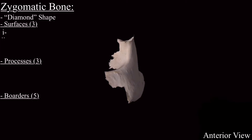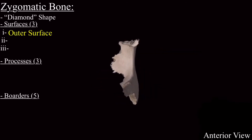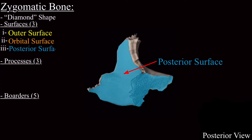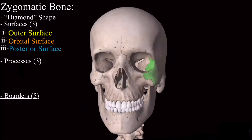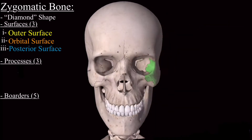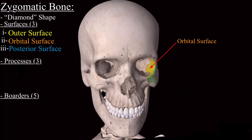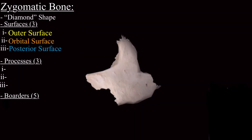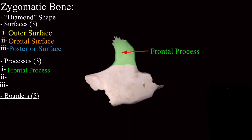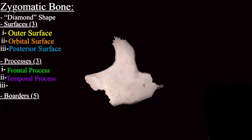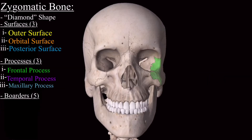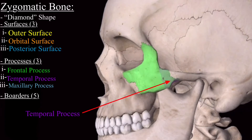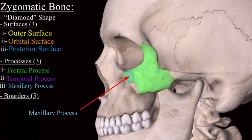The three surfaces are the outer surface, the orbital surface, and the posterior surface. In the complete skull model, these three surfaces are identifiable. The three processes are the frontal process, the temporal process, and the maxillary process, all visible on the complete skull model.